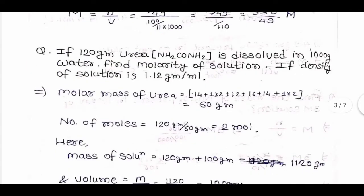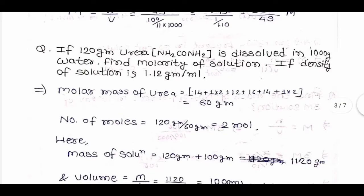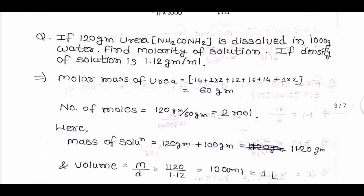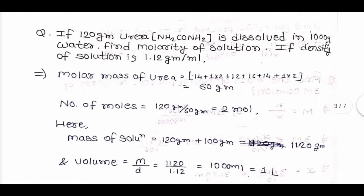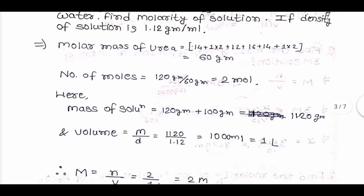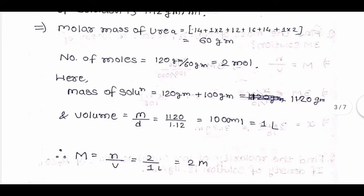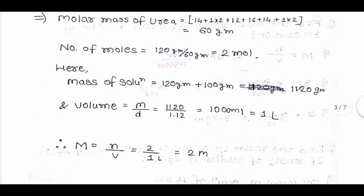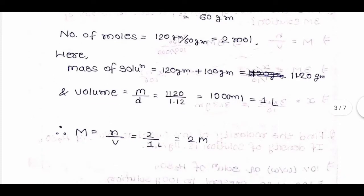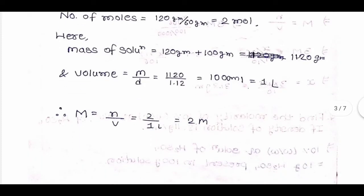Next question: 120 grams of urea dissolved in 1000 grams of water; find the molarity if density of solution is 1.12 g/mL. Molar mass of urea = 60 g, so moles = 120/60 = 2 moles. Mass of solution = 120 + 1000 = 1120 g. Volume = 1120/1.12 = 1000 mL = 1 liter. Therefore molarity = 2/1 = 2 M.